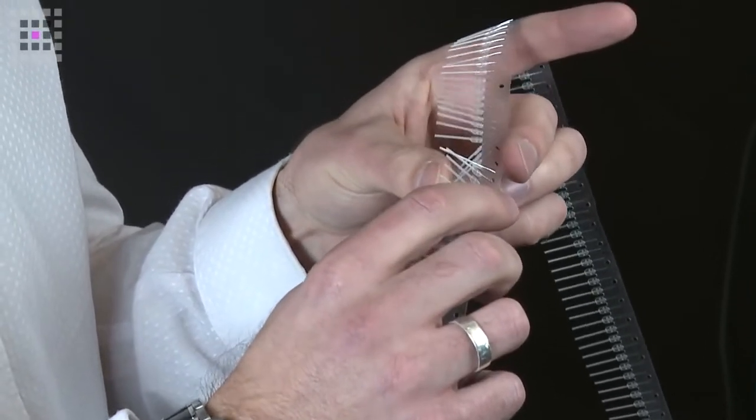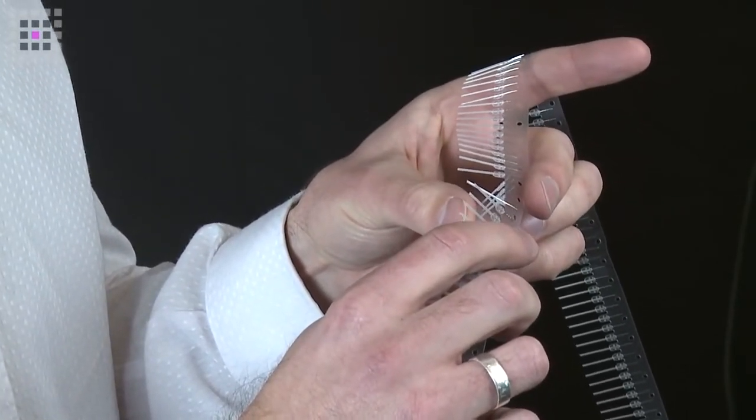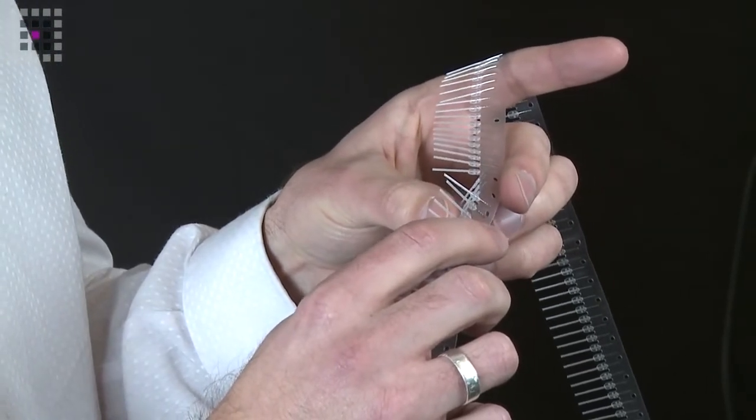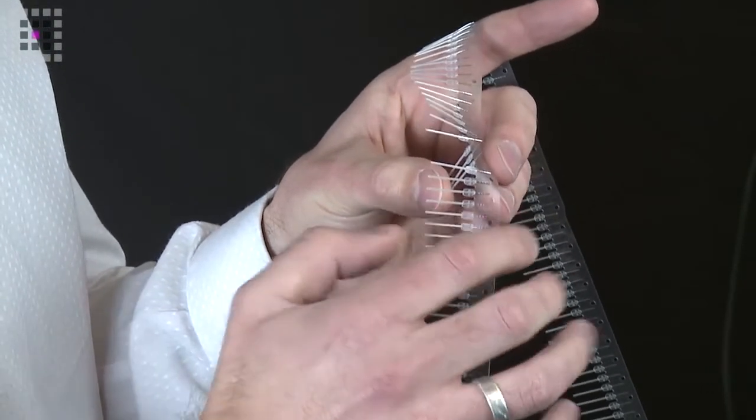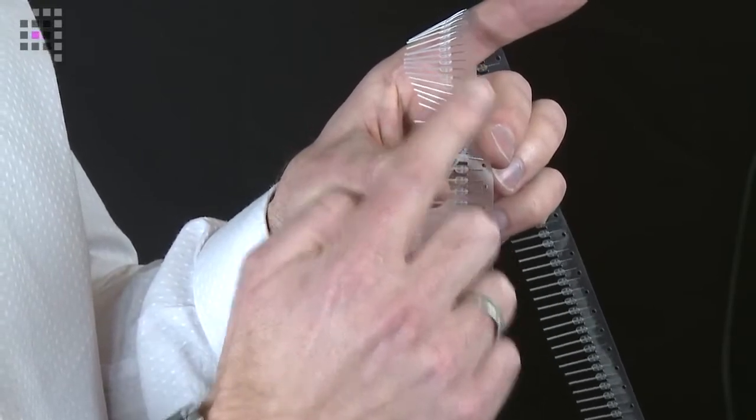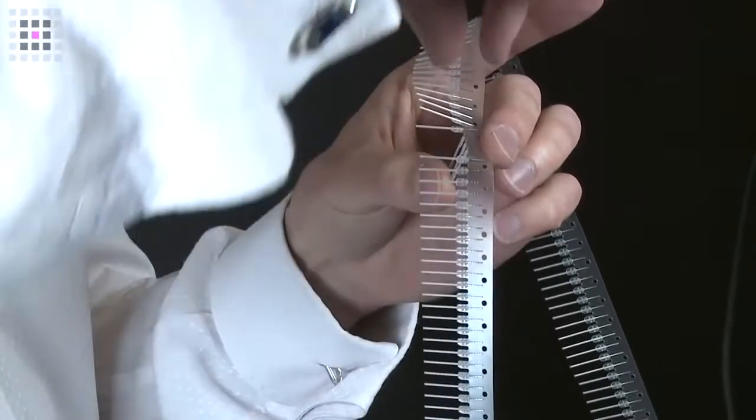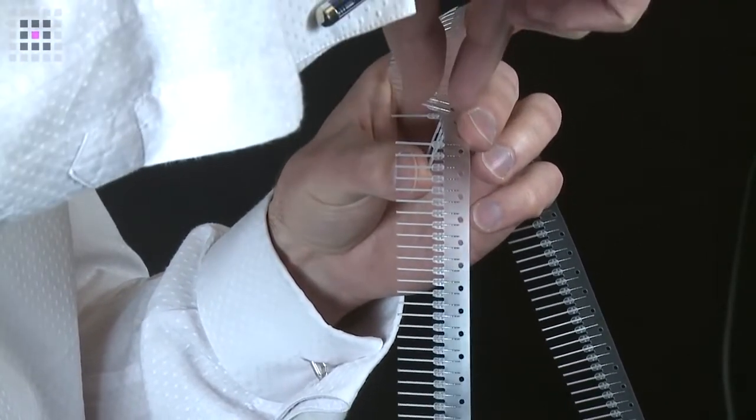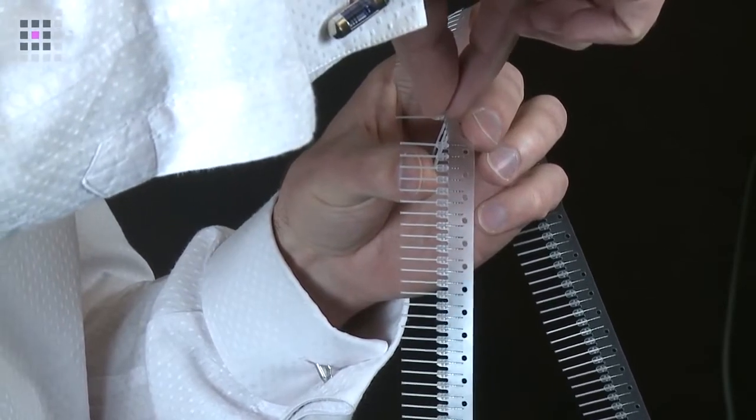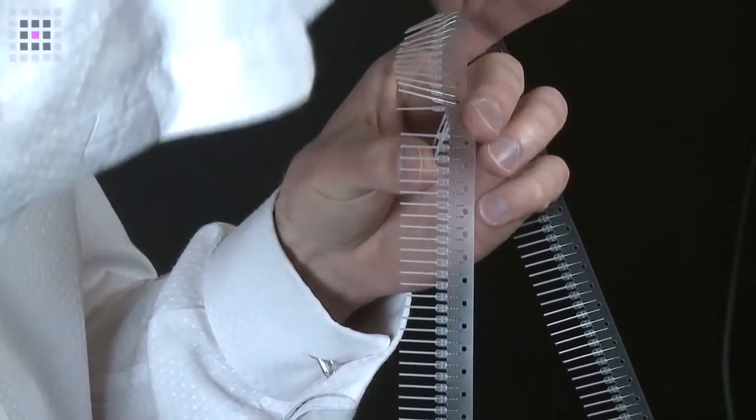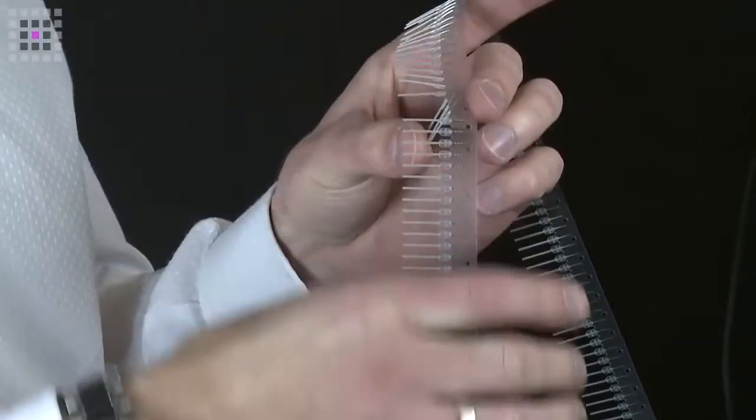This not only presents the base of the pipette tip downwards into the assay plates ready for aspiration and dispense moves, but also the pistons are presented upwards so that the clamping mechanism and jaw mechanism can grip the piston and actuate it for aspirate and dispense motion.